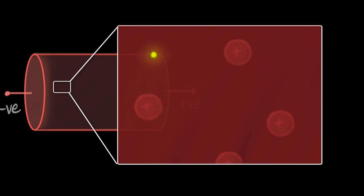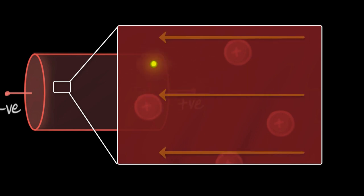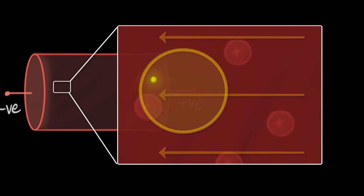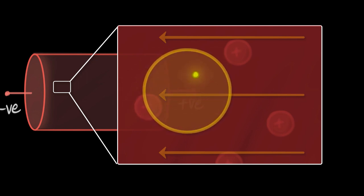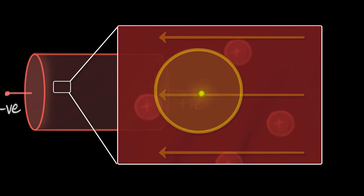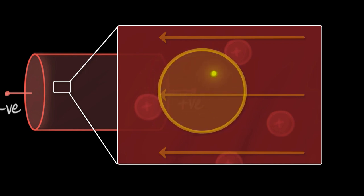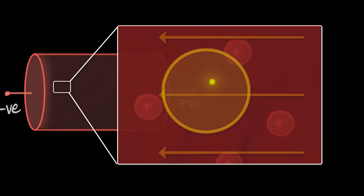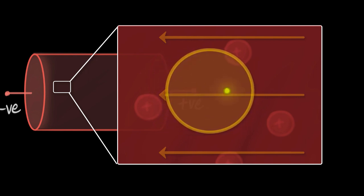But when you do hook it up to a battery, an electric field gets set up, and now the electrons start getting accelerated in the opposite direction, due to which they start drifting in the opposite direction of the electric field with a constant velocity, which we call the drift velocity.